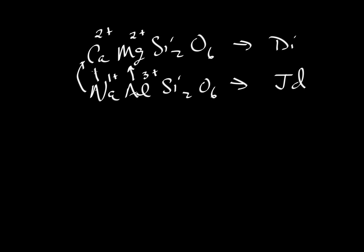So we'll put sodium over here and aluminum over there and we take care of the charge. The way we can write this is calcium and magnesium go in as a couple and substitute for sodium and aluminum which also go in as a couple.